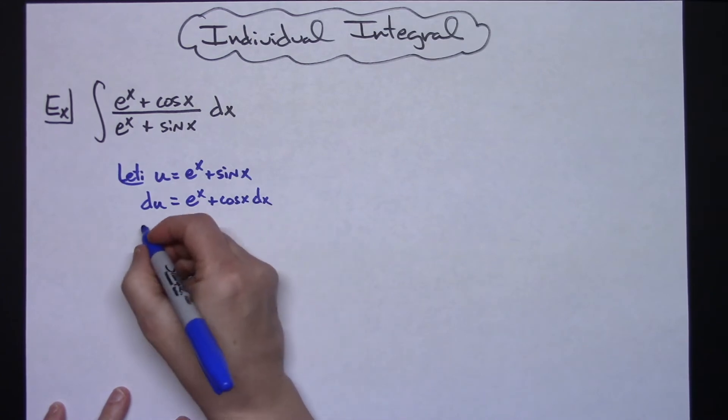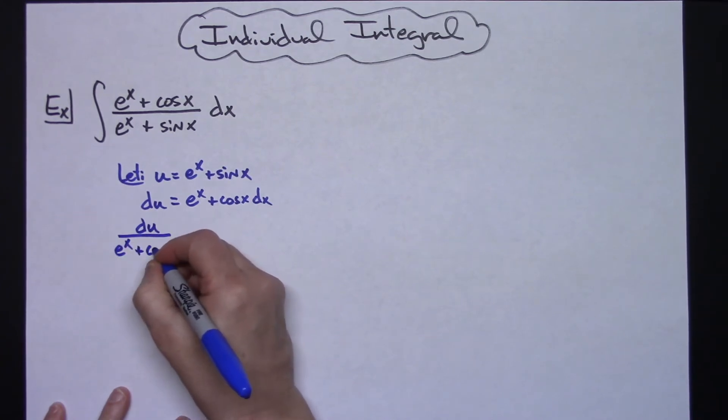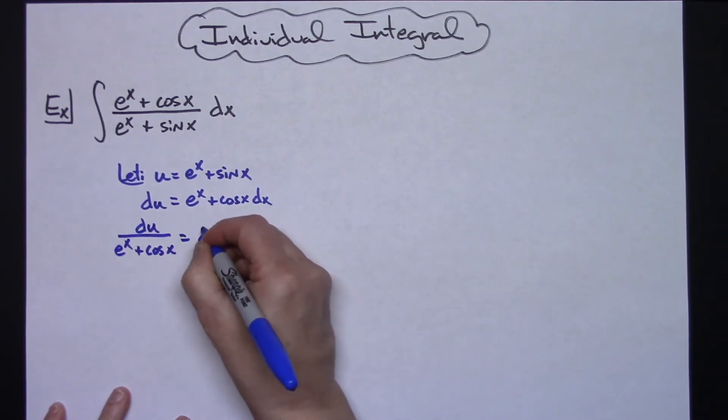We'll go ahead and solve for that dx. Dividing both sides by that, we'll have du over e to the x plus cosine x equaling our dx.